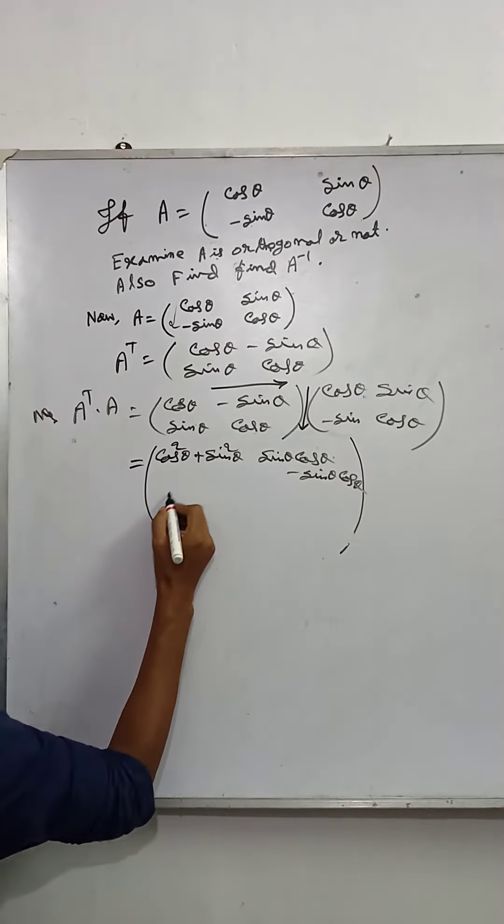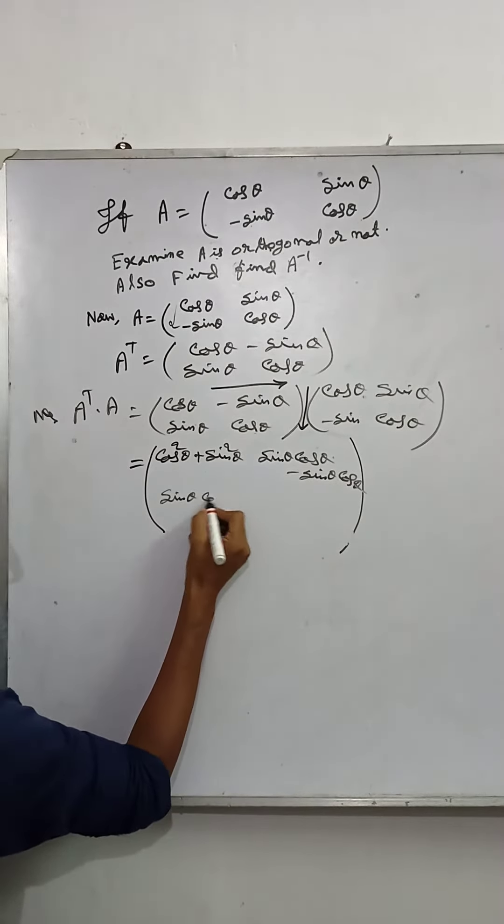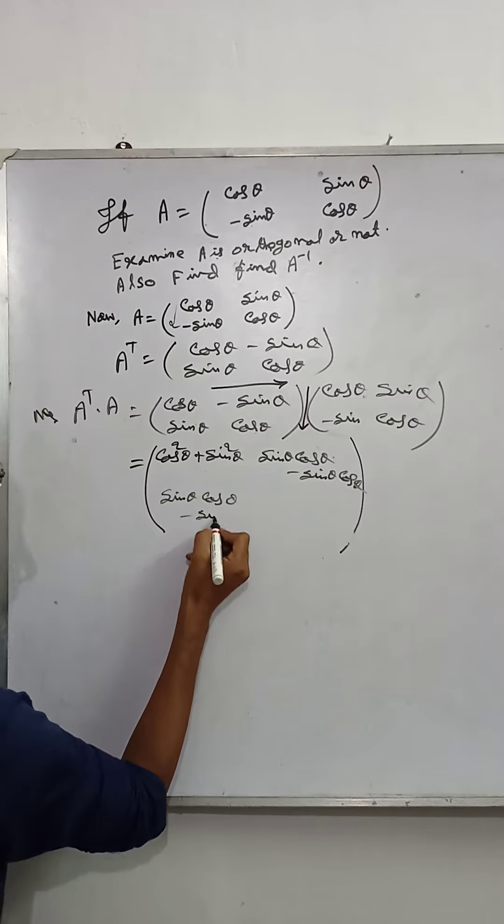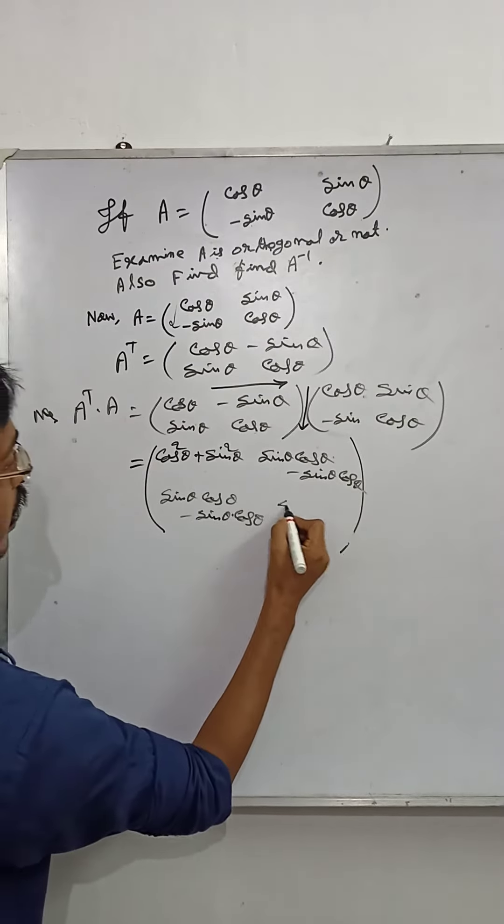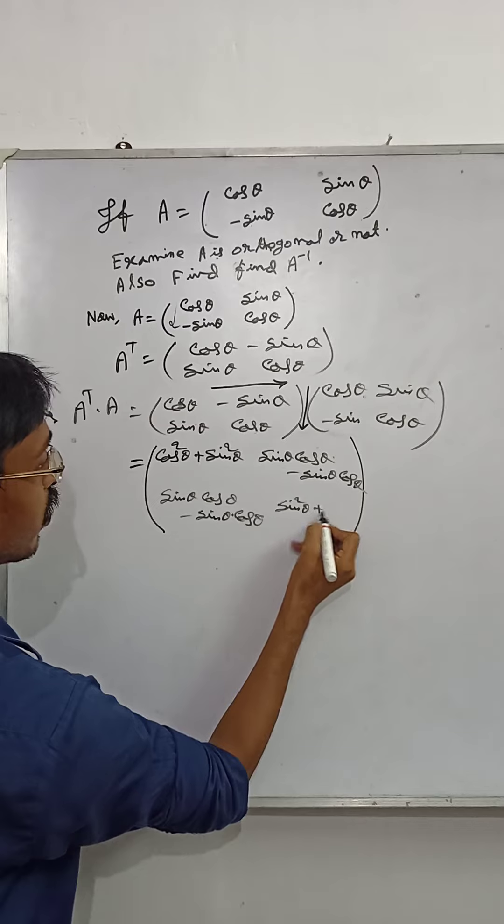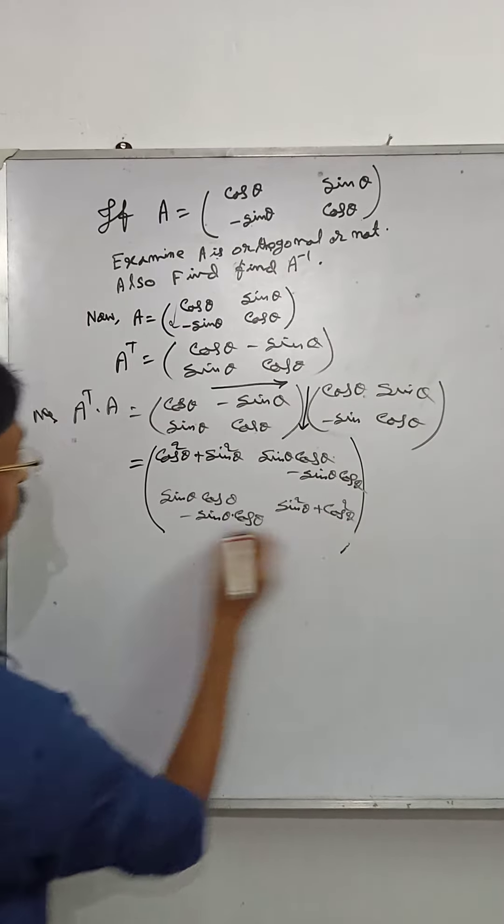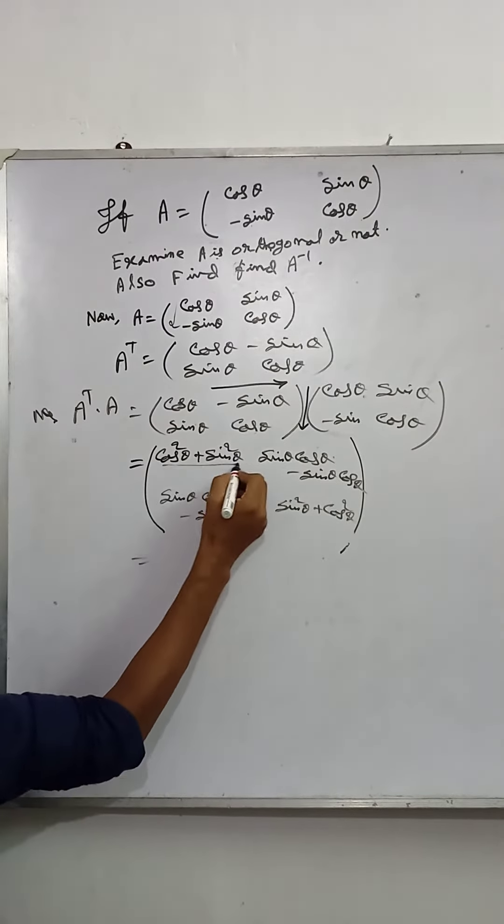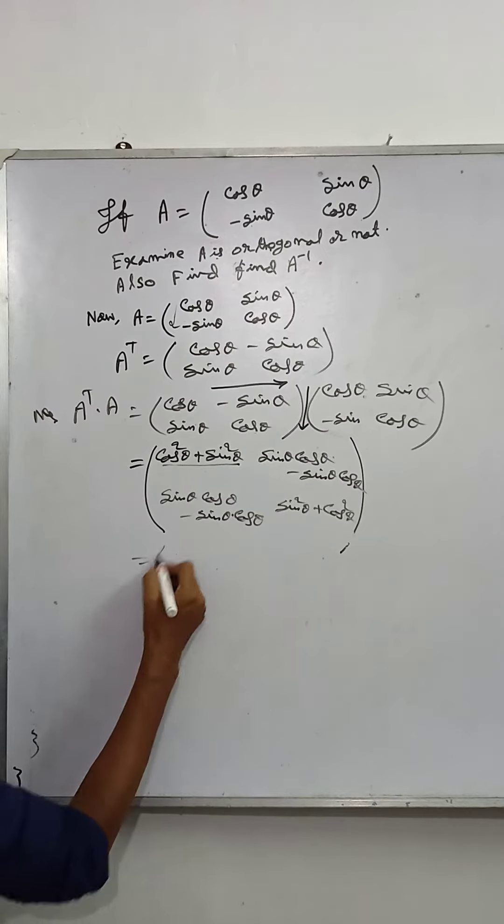That means sin θ cos θ minus sin θ into cos θ. Then sin²θ plus cos²θ. The value of sin²θ plus cos²θ is 1.